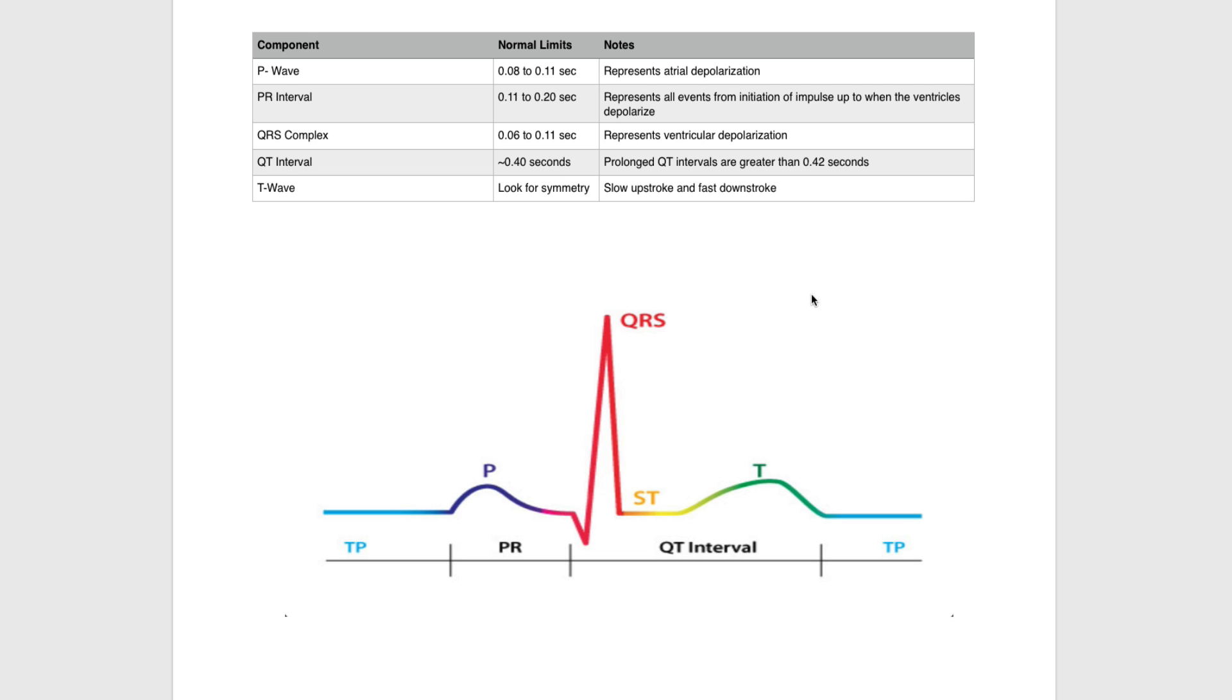Next is the T-wave, shown here in this greenish-yellow line that ends when it turns blue. With the T-wave we look for symmetry: a slow upstroke followed by a fast downstroke.